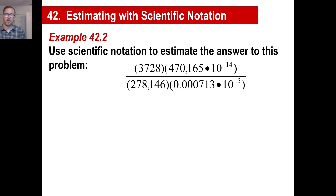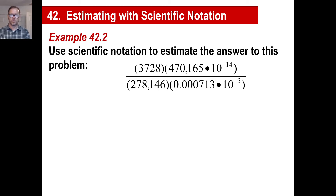Let's look at this one. We're going to estimate the answer to this problem, which looks just monstrous, but we can get reasonably close. Again, what we want to do is take each one of those numbers and turn it into something in scientific notation. In other words, you want every one of these numbers to turn into some number with one integer and then a bunch of zeros.